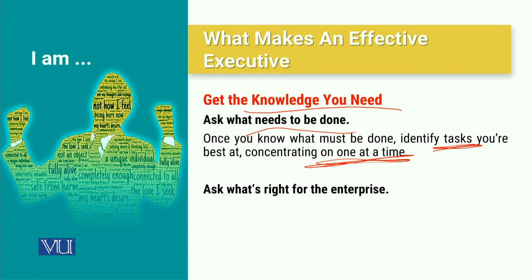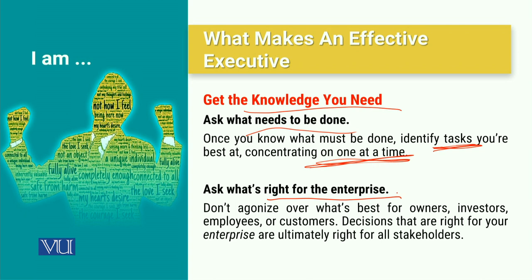The second thing you need to know is ask what's right for the enterprise, and obviously that should be in the right direction of their mission, vision and values, and that should be according to the defined objectives. Don't agonize — this is a very important thing — don't agonize over what's best for owners, investors, employees or customers. Decisions that are right for your enterprise are ultimately right for all the stakeholders.